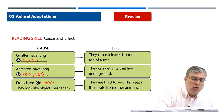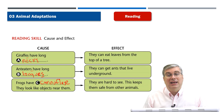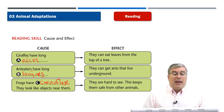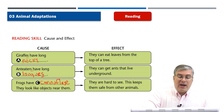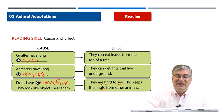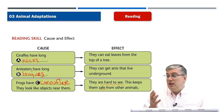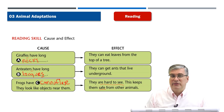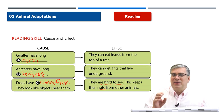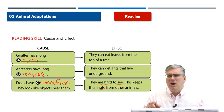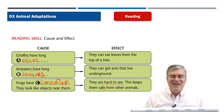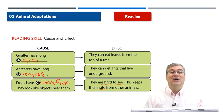We call that camouflage — C-A-M-O-U-F-L-A-G-E. Because of camouflage, they are hard to see. This keeps them safe from other animals because animals that might eat those frogs, birds, or octopuses can't see them very well. So they won't eat them. Camouflage keeps them safe from other animals.